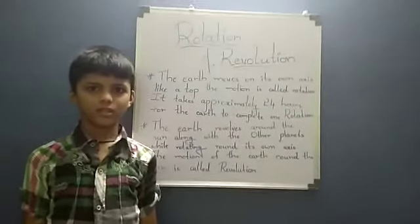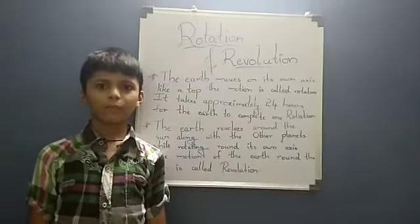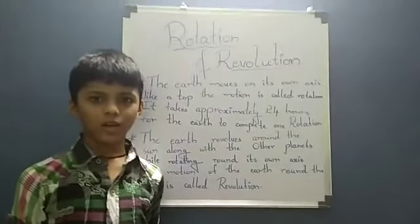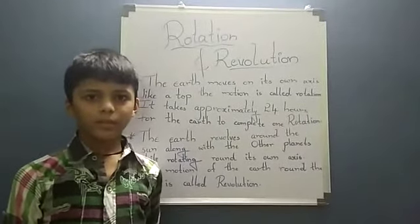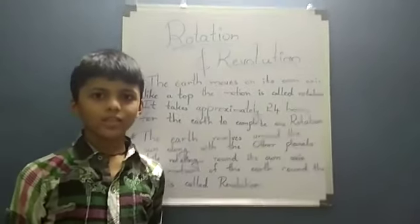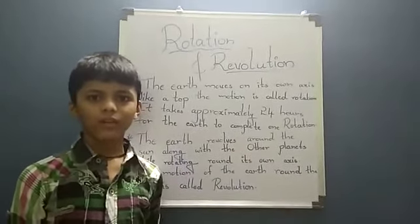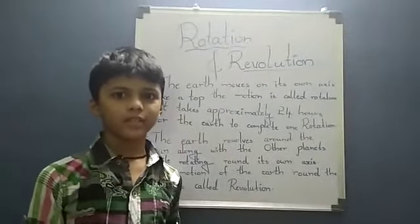The earth takes 365 and a quarter days to complete one revolution. The earth revolves around the sun at a speed of 106,560 km per hour. In every 4 years, a day is increased.